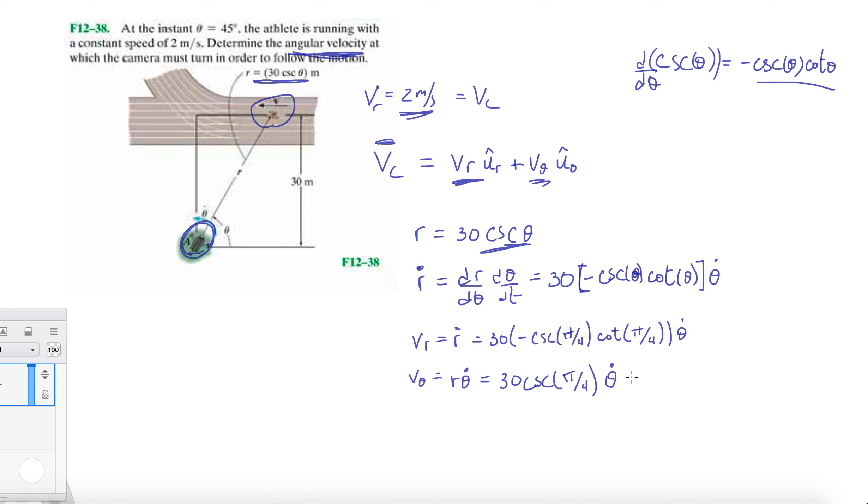Times theta dot, that's all. So now we know that V, which is 2 meters per second, has to equal the magnitude of these two components.